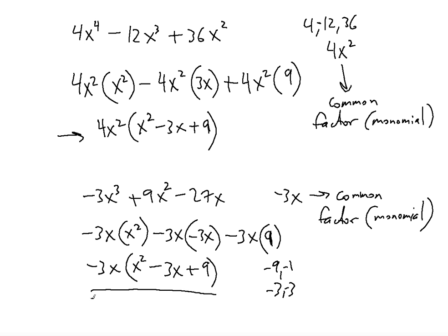So this is the farthest that you can get in terms of factoring. So this is how you factor out the common factor, the monomial, when you see an expression like this. I'll see you in my next video. We're going to talk about another factoring form.